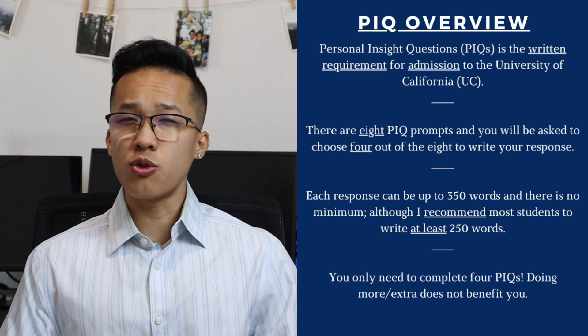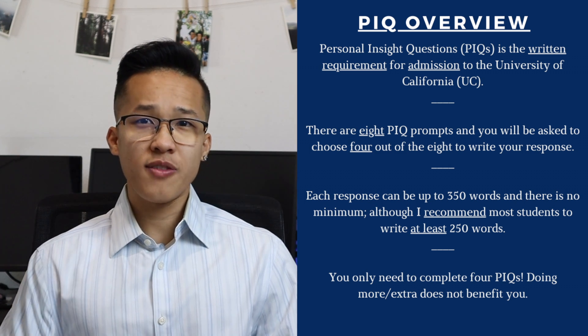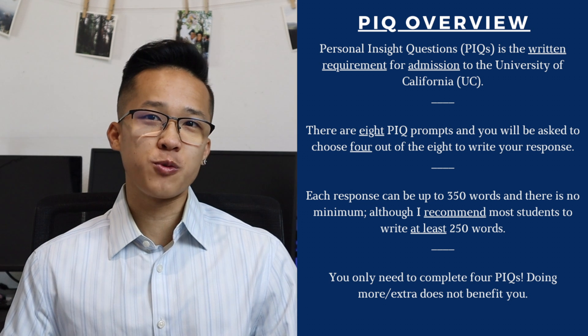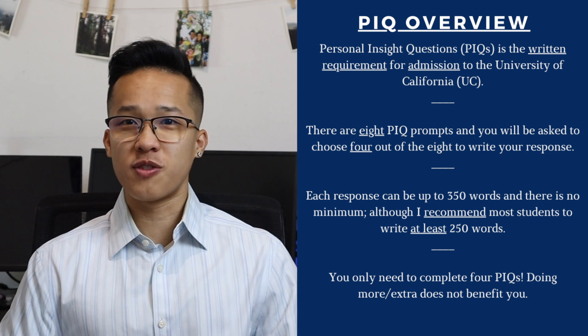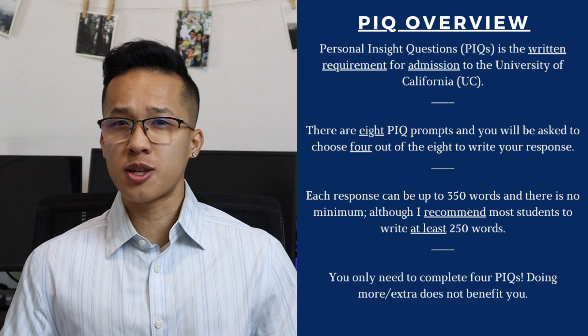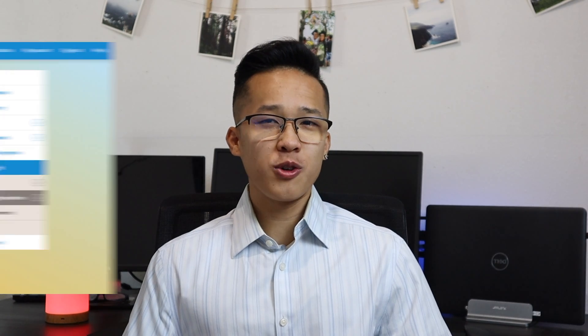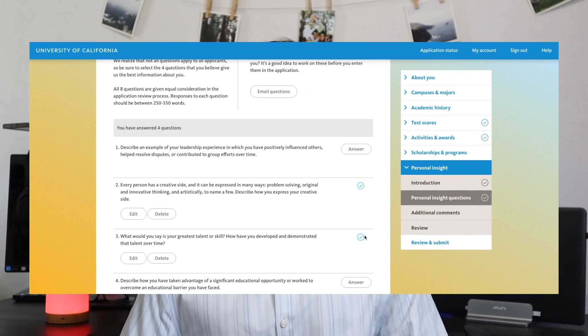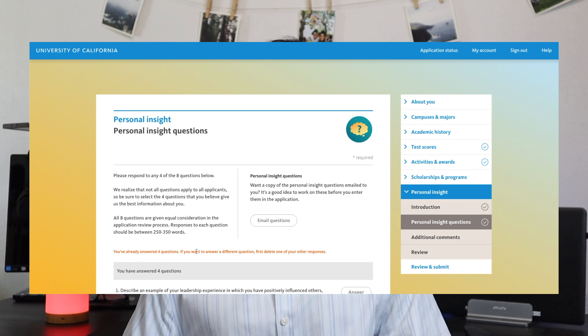My last general piece of information about the PIQs is that you can only write four responses. I've had a lot of students in the past asking me if writing a fifth or sixth response would make them look like a better student. First, the UC application wouldn't allow you to write more than four responses anyway. But more importantly, you just really want to focus on the four main prompts that are most important or meaningful to you. Just really focus on the ones that are most important to you and then answer them from there.